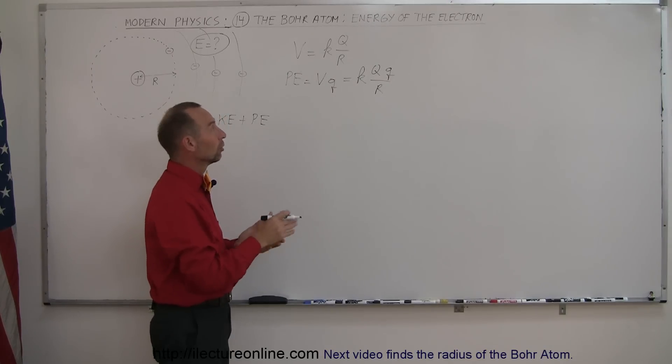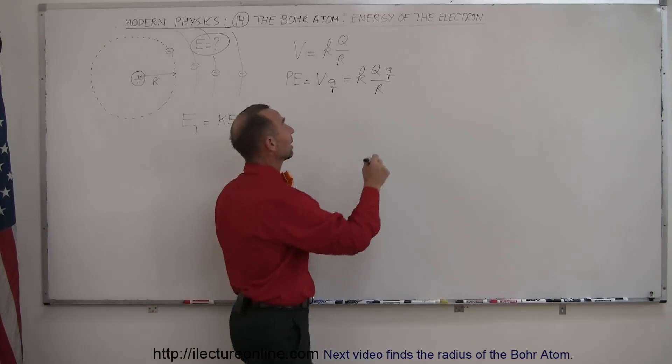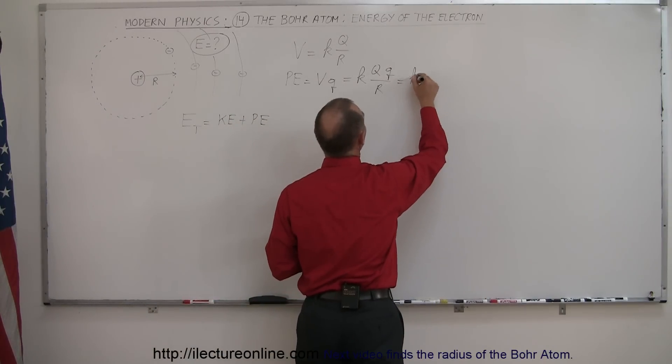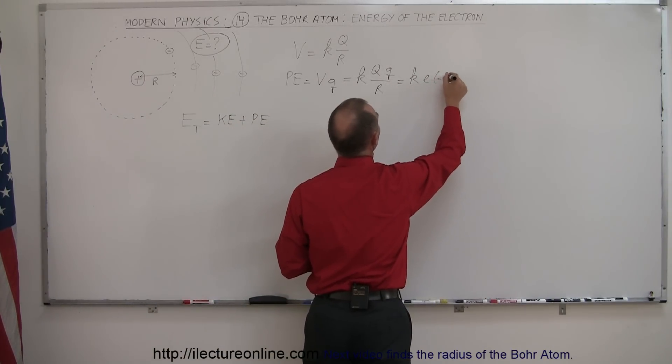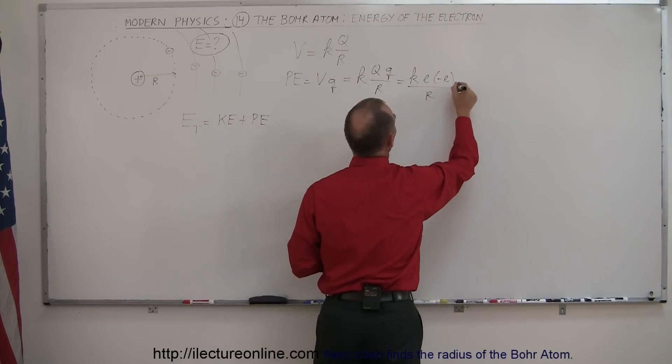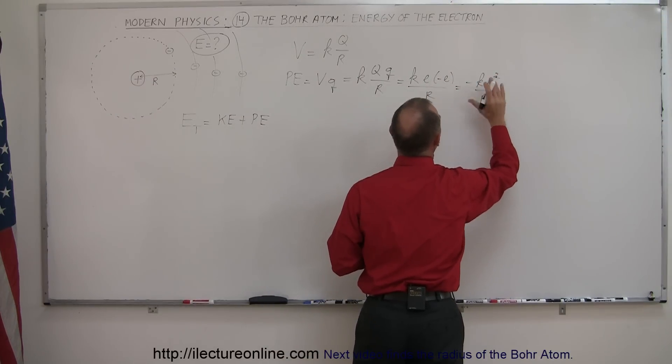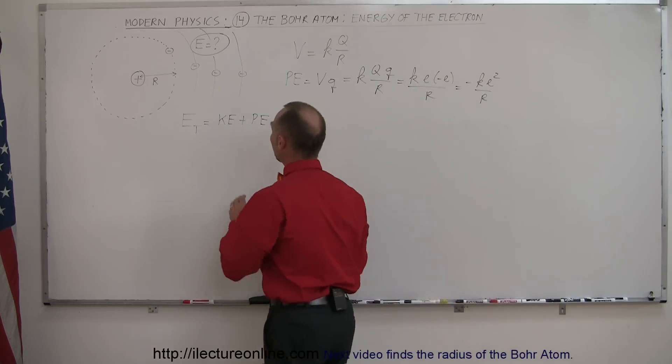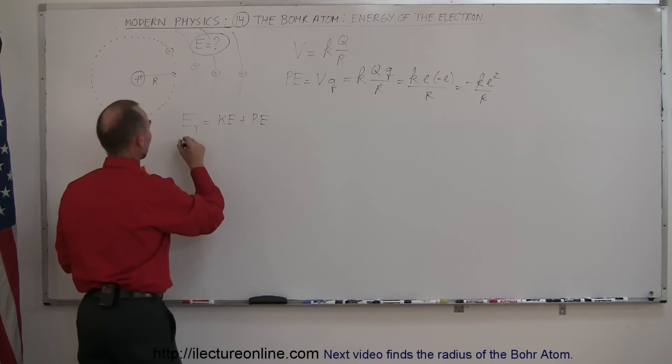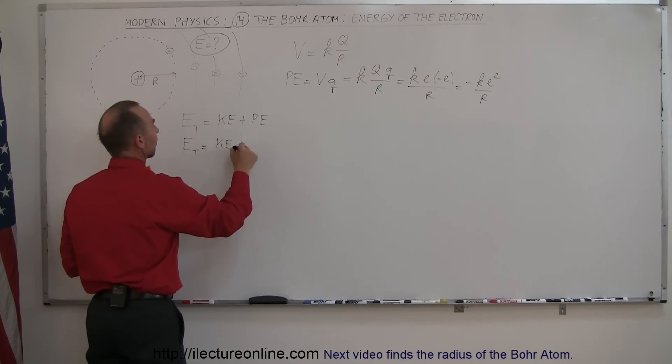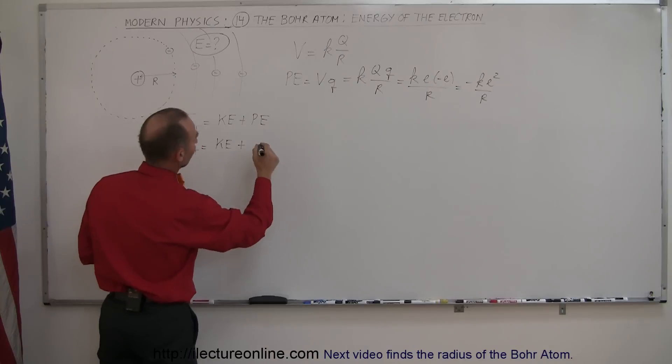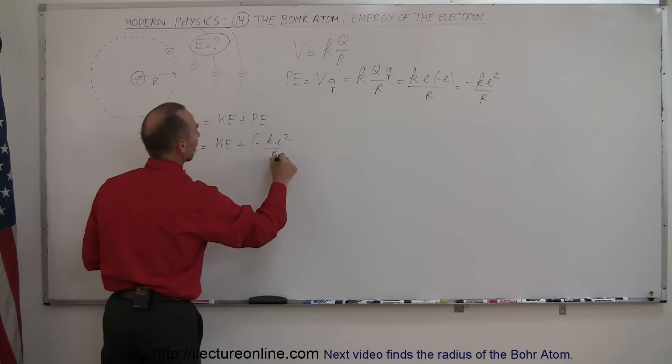The charge on a proton and charge on an electron is the same, so let's call it e for electron charge. Knowing that the charge of the proton is positive and the charge of the electron is negative, we can say that this is equal to K times e times negative e over R, or minus Ke² over R. So E_total is equal to the kinetic energy plus the potential energy, which is minus Ke² over R.